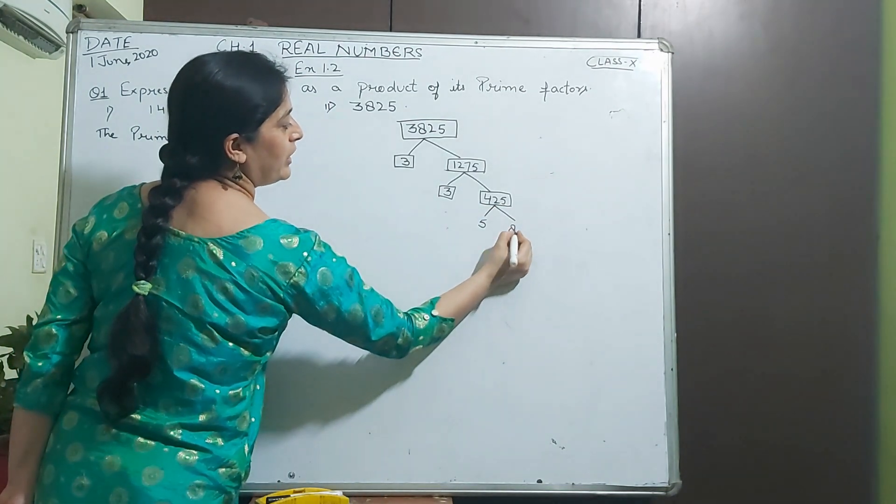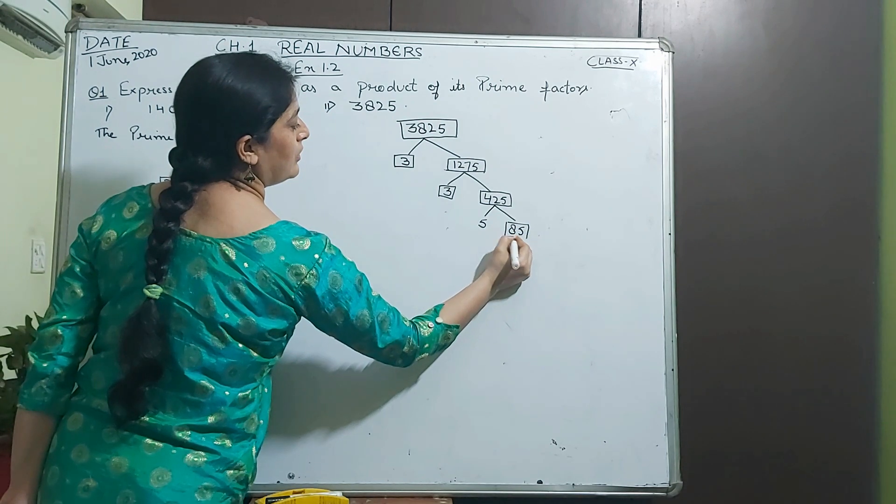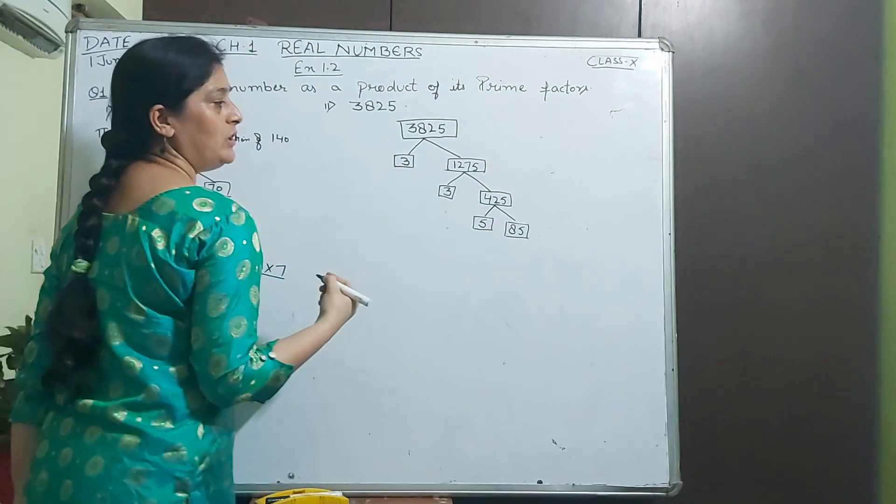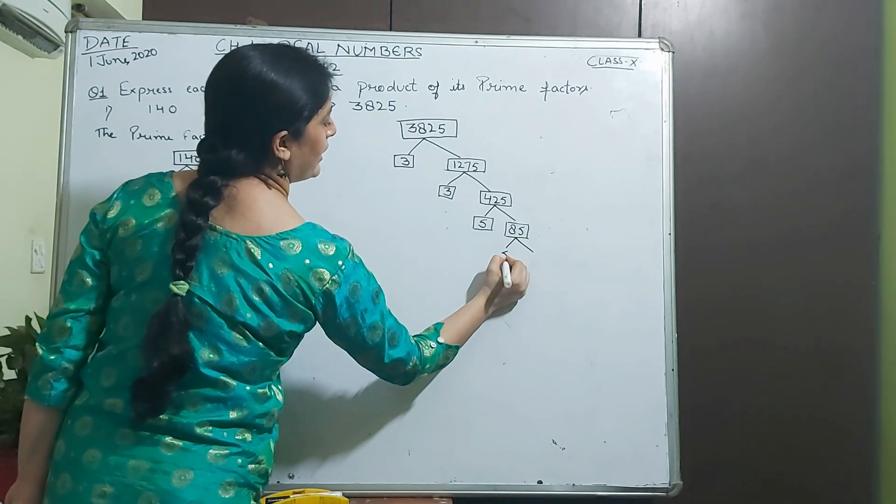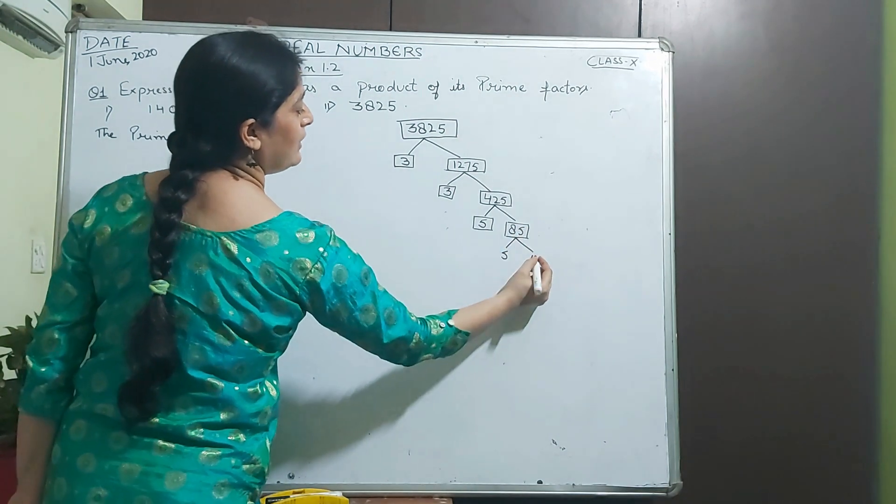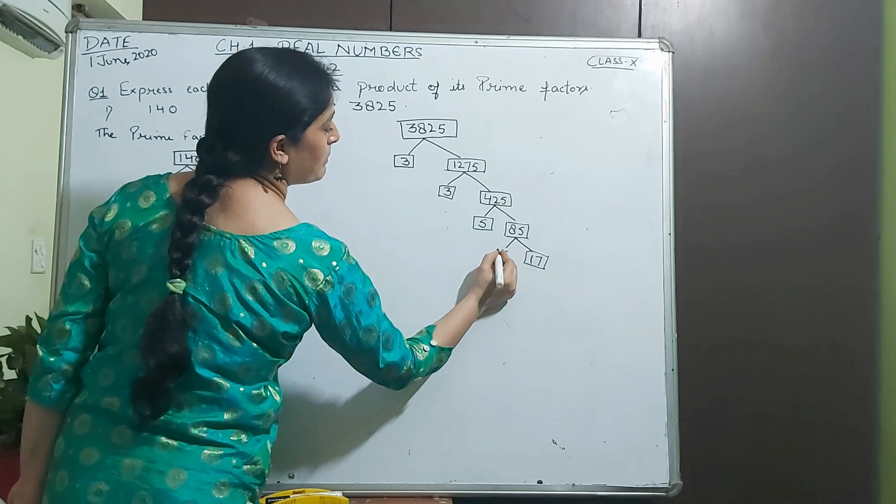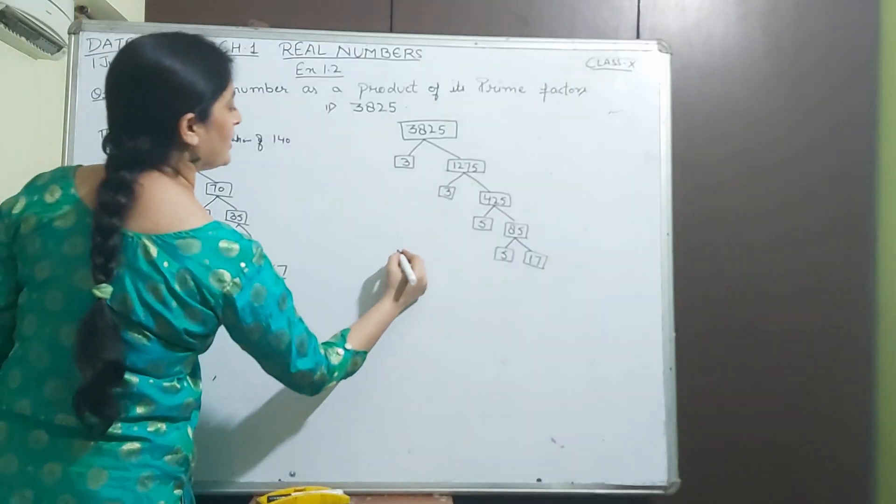Again factor this number by 3. 3 times 1 is 3, carry 3, 3 times 5 is 15. Again factor: 3 times 1 is 3, carry 5. Now we get 5 times something. 5 times 1 is 5, 5 times 7 is 35. 17 is a prime number, no more factors.